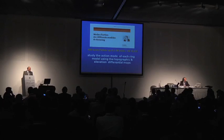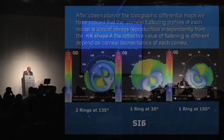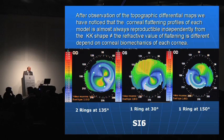For this purpose, we performed a study of 420 eyes in which we analyzed the action mode of each ring model using topographic and elevation differential maps. The important finding is that after observation of the topographic differential maps, we noticed that the corneal flattening profile of each model is almost always reproducible and independent from the ectasia shape.